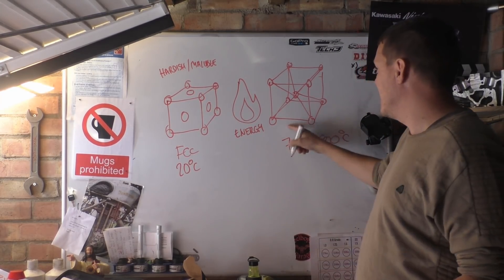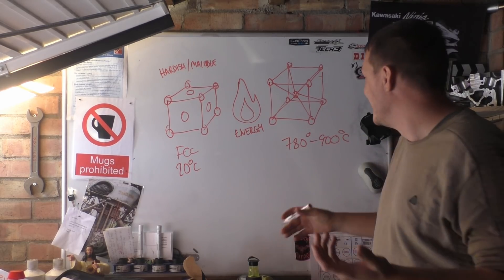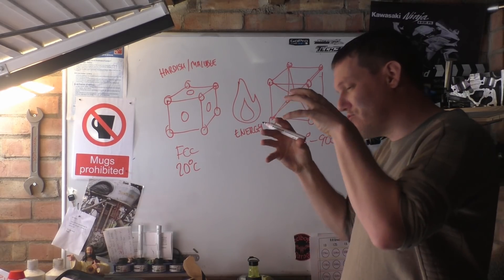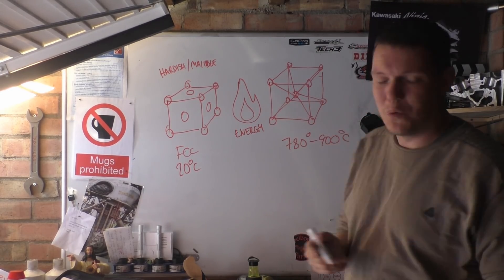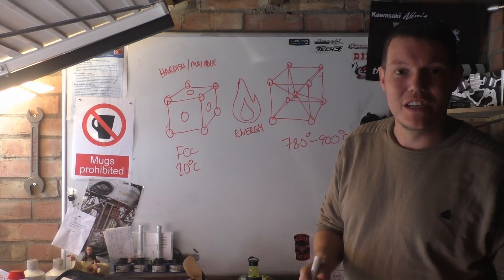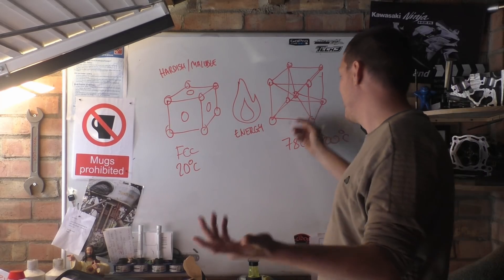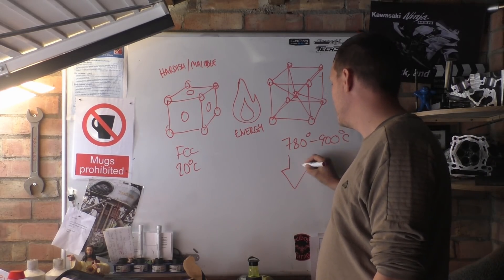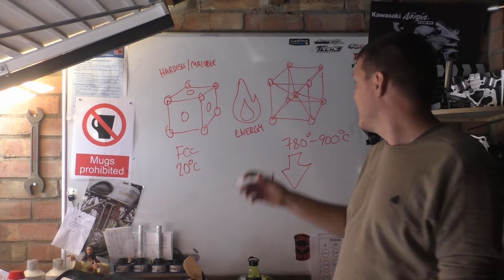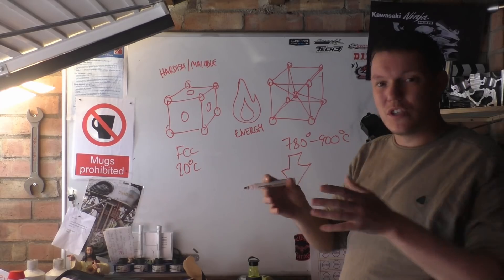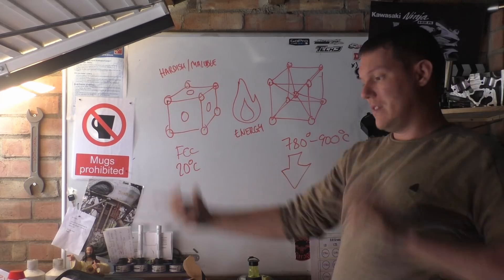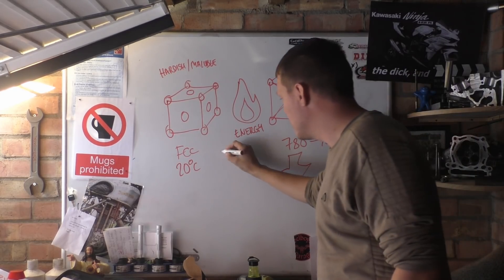The problem is that this is at this high temperature, so the steel is soft as fuck, but the structure inside has changed. And if we could cool this, if we could keep this structure at room temperatures, it would be a lot harder. So that's what we do - we dump this in water, so the temperature drops out of the ass and there isn't enough time for the carbon to diffuse out, to move out of this central location.